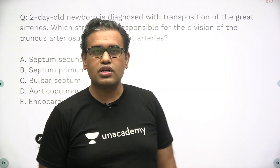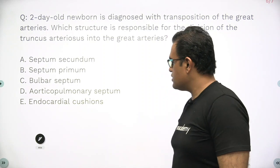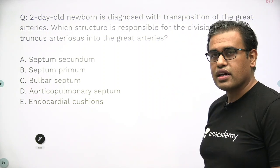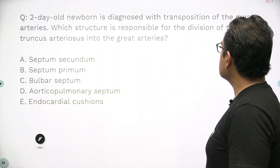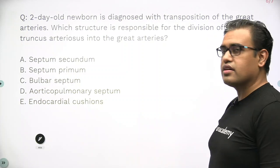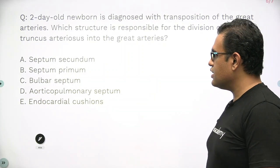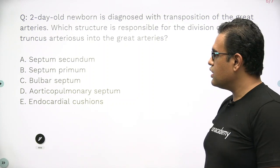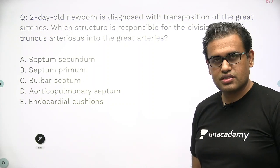Let's start the MCQ. A 2-day-old newborn is diagnosed with transposition of the great arteries. Which structure is responsible for the division of the truncus arteriosus into the great arteries? Options are: A) septum secundum, B) septum primum, C) bulbar septum, D) aorticopulmonary septum, and E) endocardial cushions.